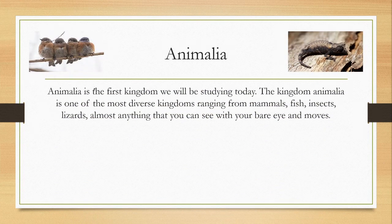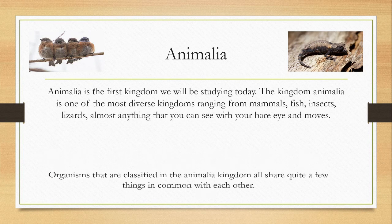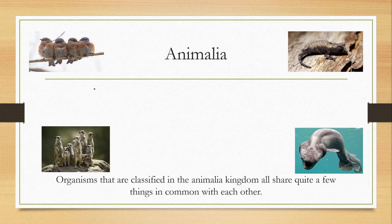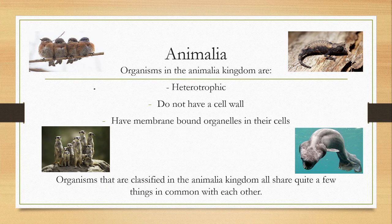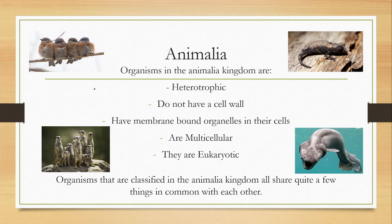Animalia is the first kingdom that we'll be studying today. The kingdom Animalia is one of the most diverse kingdoms, ranging from mammals, fish, insects, lizards, and almost anything else that you can see with your bare eye and moves. Organisms in the Animalia kingdom are heterotrophic, meaning they eat and get energy from the stuff that they eat. They do not have cell walls, they have membrane-bound organelles, they are multicellular, and they are eukaryotic, meaning they carry their nucleus and all their DNA and RNA in a membrane-bound section of their cell.